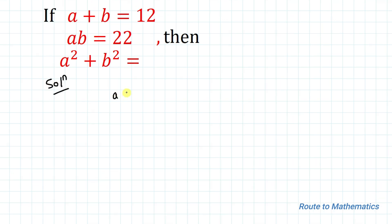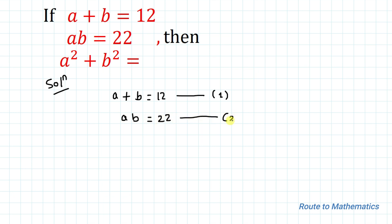The given equations are: a plus b equals 12 — this is equation 1 — and a multiplied by b equals 22 — this is equation 2. We need to find out the value of a squared plus b squared. In equation 1 we already have a plus b equals 12.